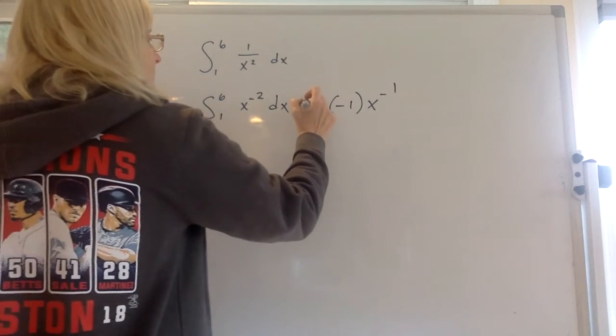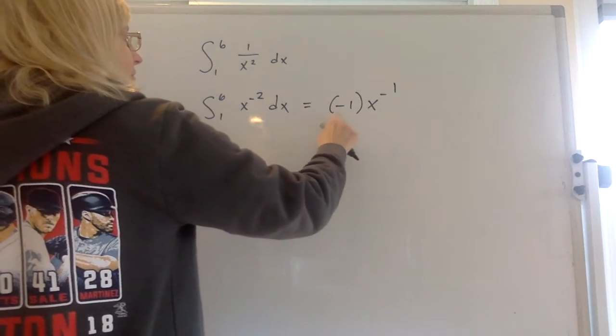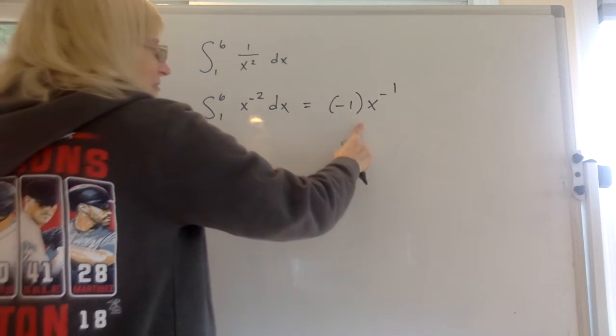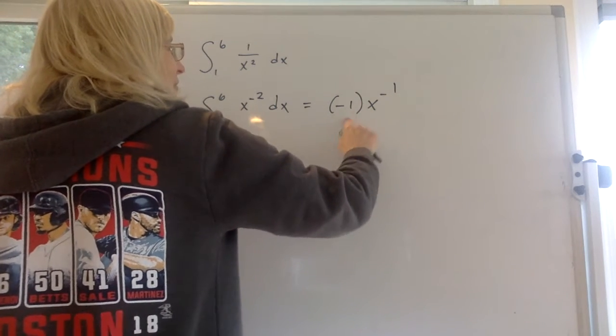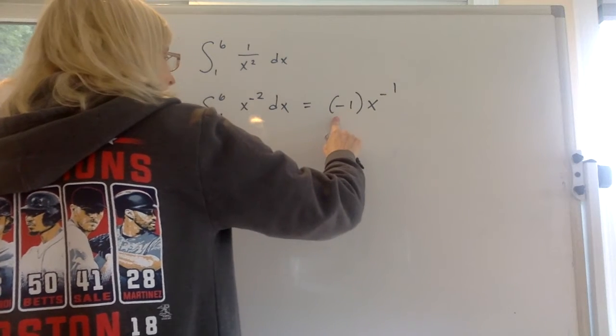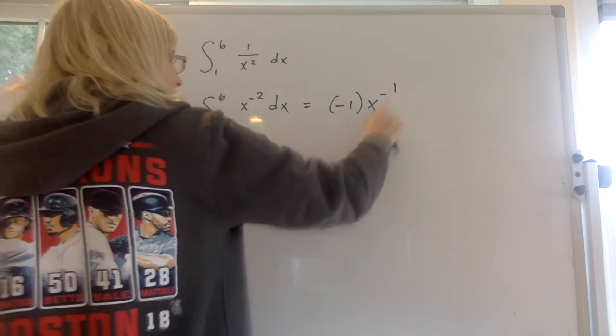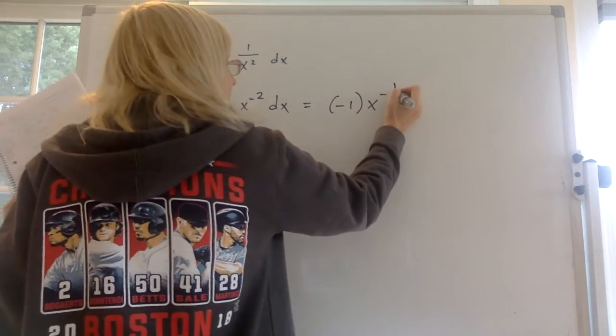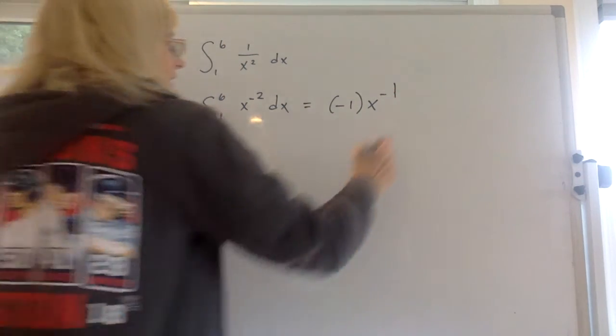Because remember when you're integrating, you're doing the reverse of derivatives, right? So if you took the derivative of this, the negative 1 times negative 1 makes it a positive. And then you subtract the 1 from the negative 1, you'd get negative 2. So I think we did that correctly.